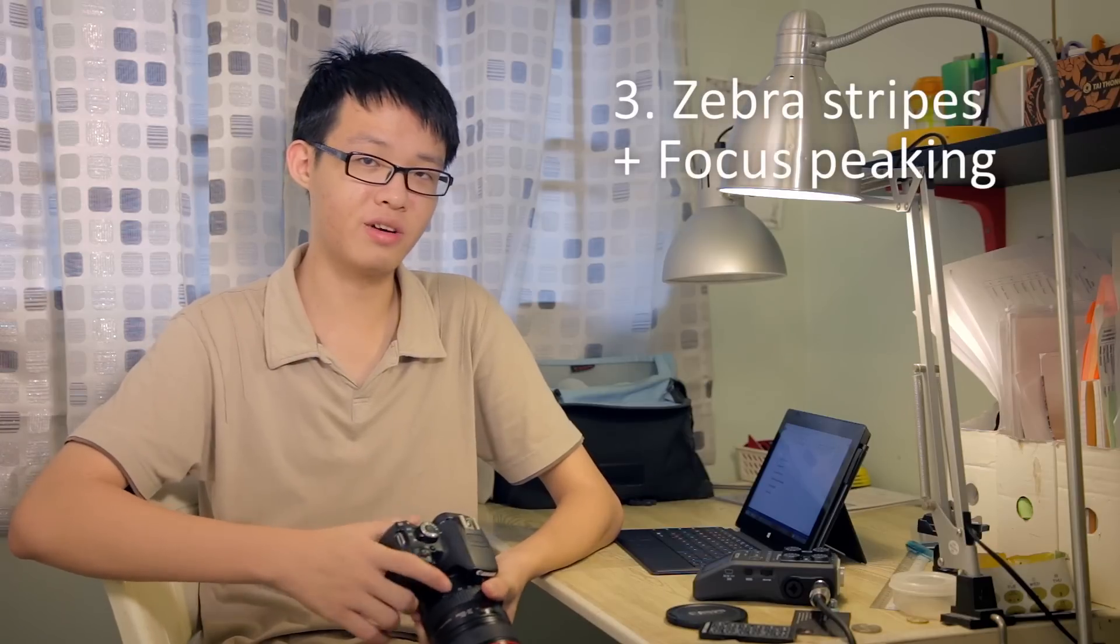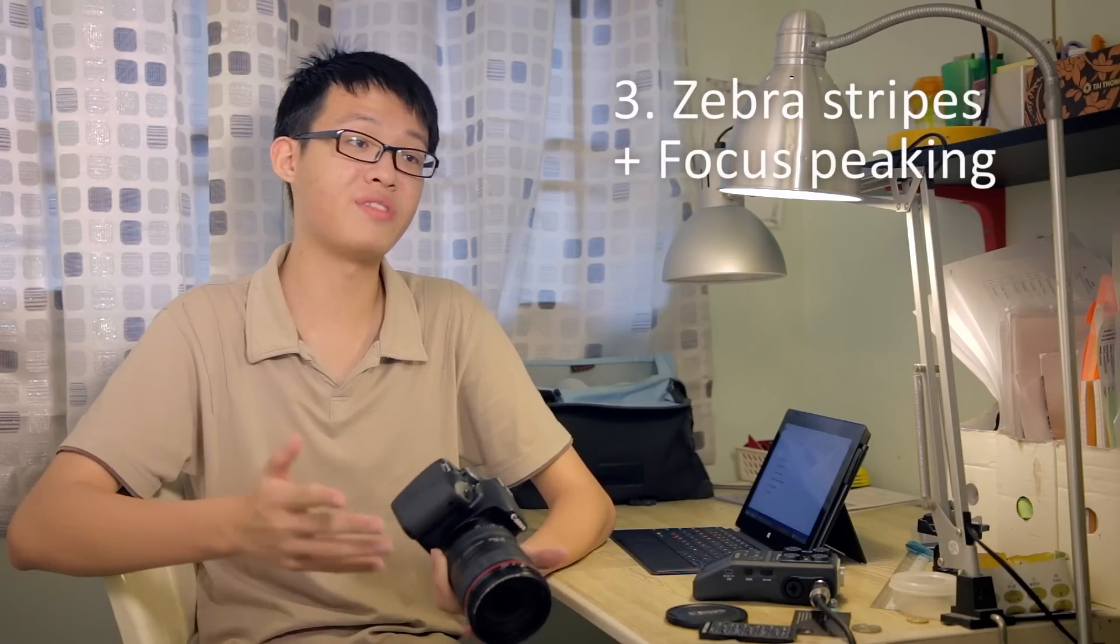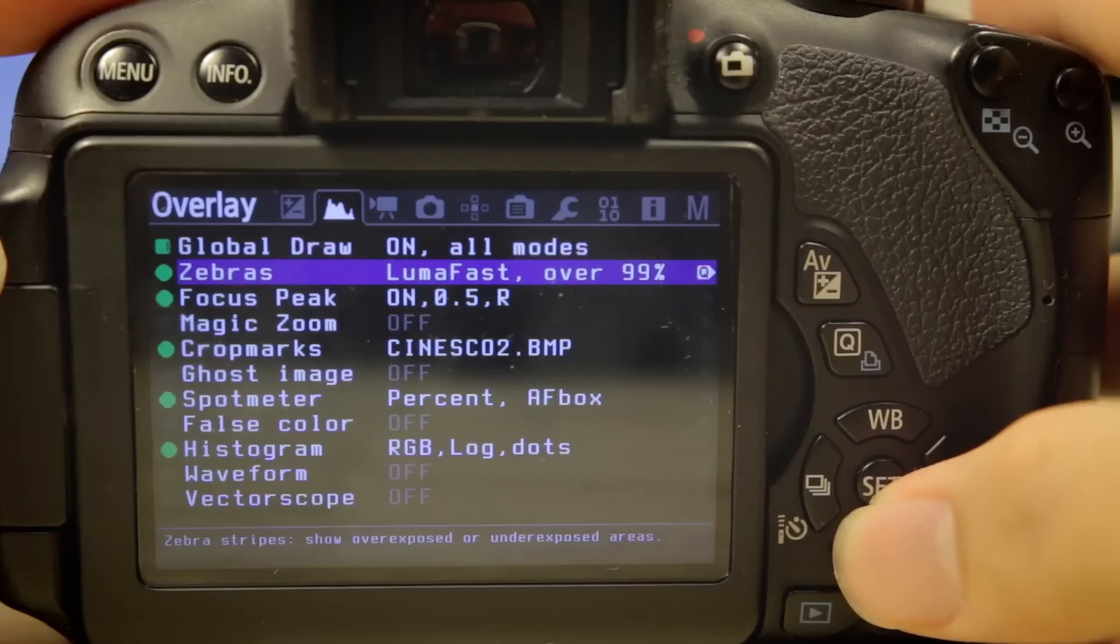Coming down at number three is Zebra Stripes and Peeking. Now, one huge feature that pretty much every Canon DSLR is missing is Zebra Stripes and Focus Peeking. Canon has made these only available on their Cinema Series cameras like the 1DC, the C100, C300. But with Magic Lantern, you can have it on any compatible DSLR.